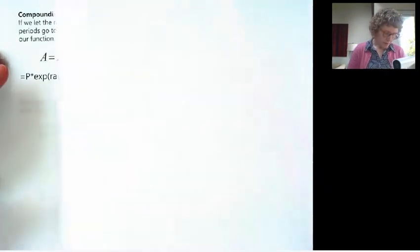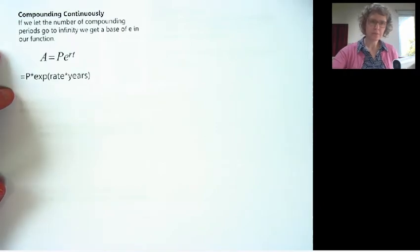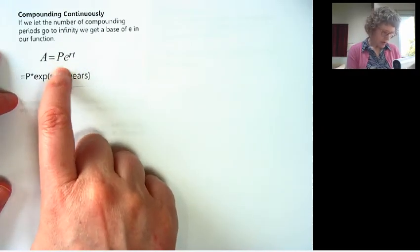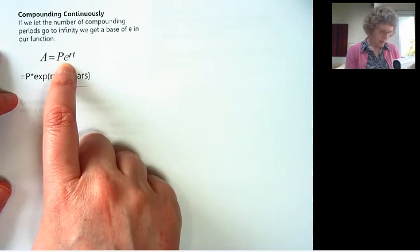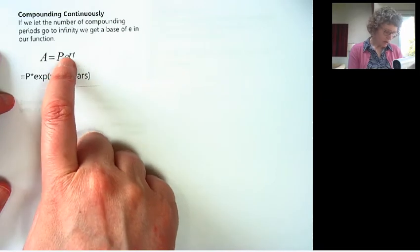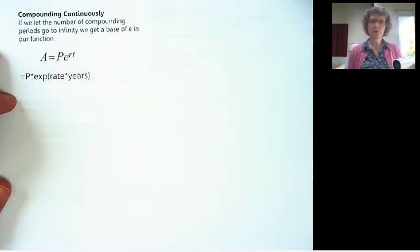Now, this is the formula, and it uses an exponential function. If you've learned in algebra about the base of E, this is the principal times E to the RT. Now, let me show you what this looks like in a graph, before we go on with how to do that.